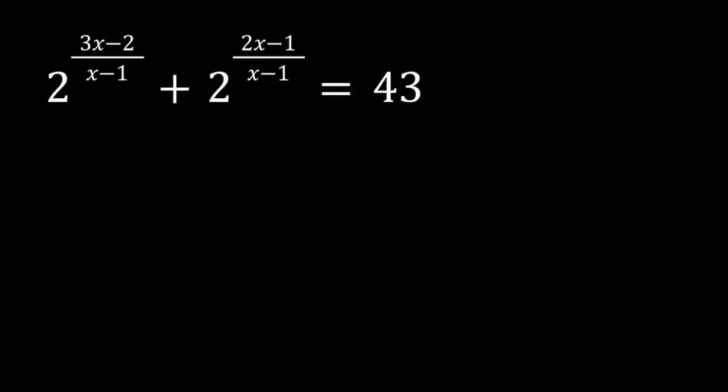Hello everyone. In this video we're going to be solving an exponential equation from Romania. We have 2 to the power of 3x minus 2 over x minus 1, plus 2 to the power of 2x minus 1 over x minus 1, equals 43. And we're going to be looking for x values.